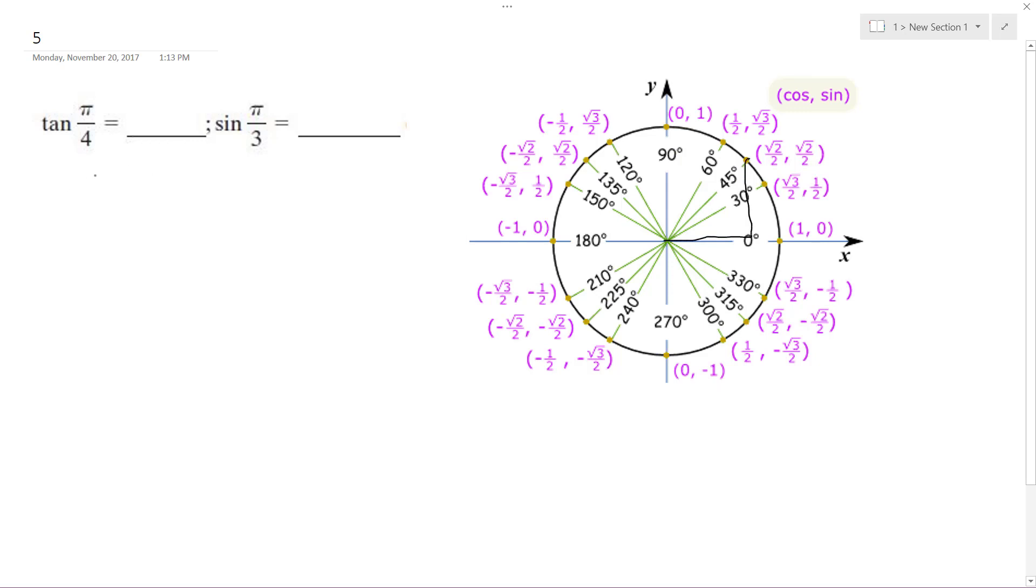According to this graph, it's y over x, so it would be √2/2 over √2/2, which is equal to 1. So the tangent is just 1.